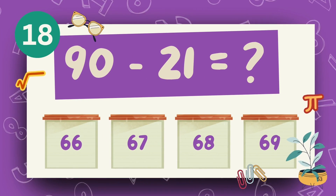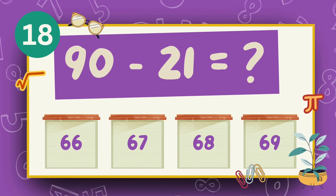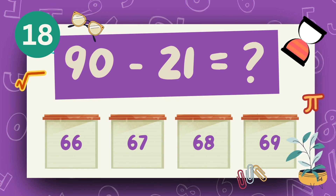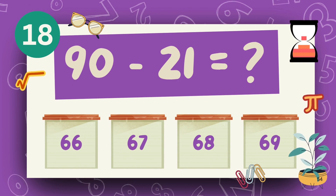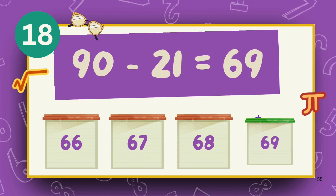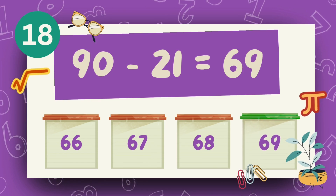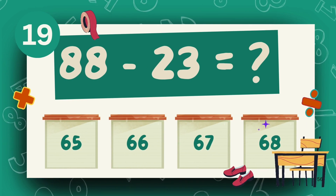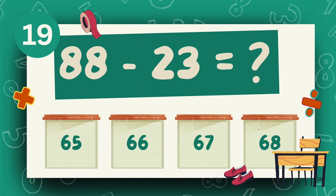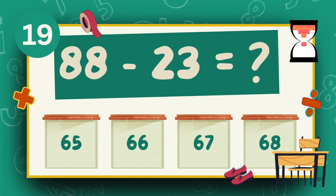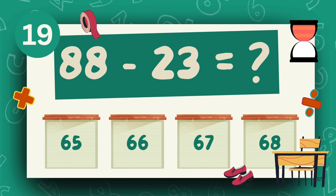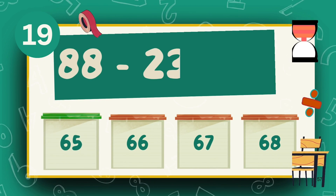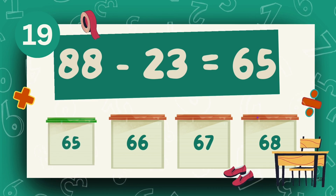What is 98 minus 23? What is 88 minus 23? The answer is 65.